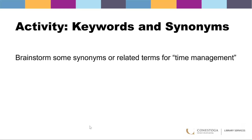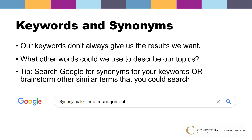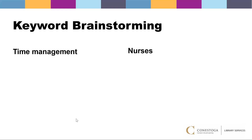Brainstorm some synonyms or related terms for time management. Our keywords don't always give us the results we want, so what other words could we use to describe our topics? One tip is to search Google for synonyms for your keywords, or brainstorm other similar terms that you could search. Now that we've done some of our own brainstorming, let's review some keyword synonyms and related terms to the terms that are a part of our research question.